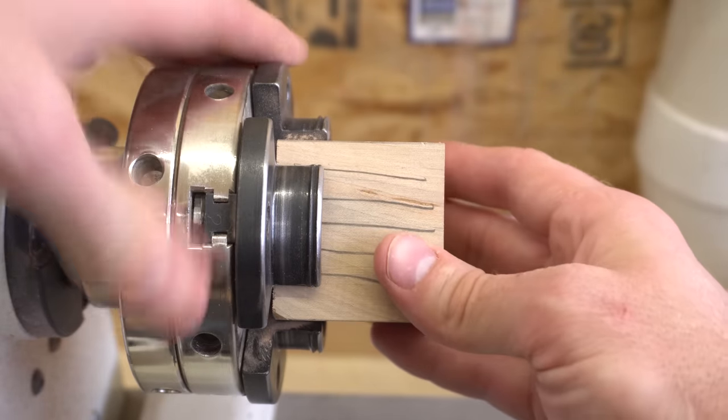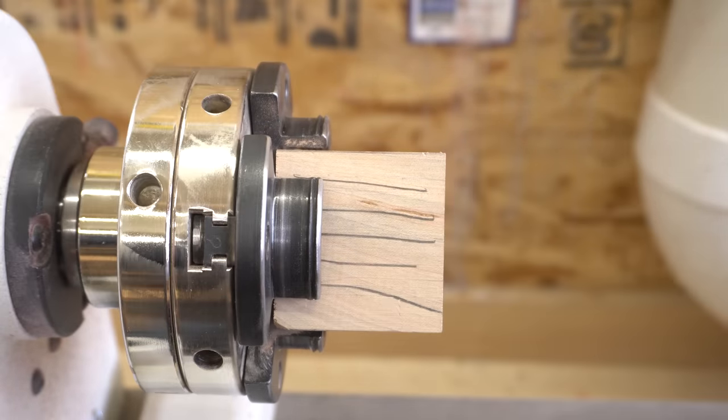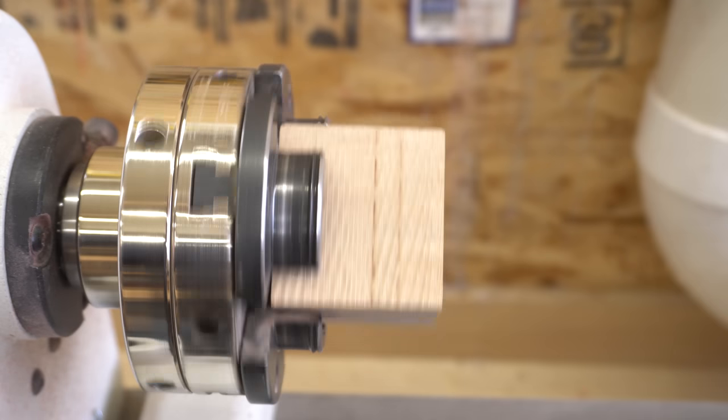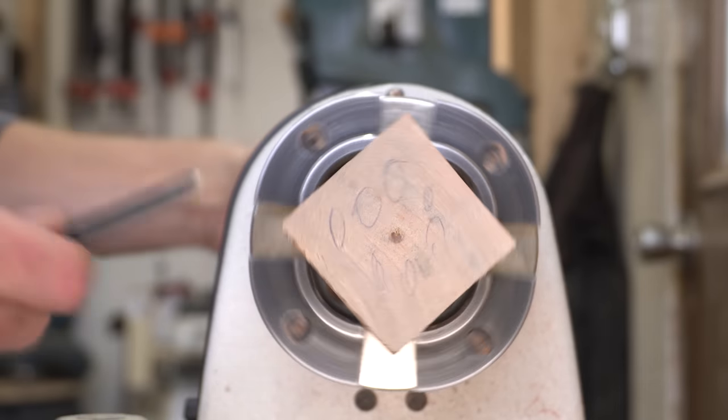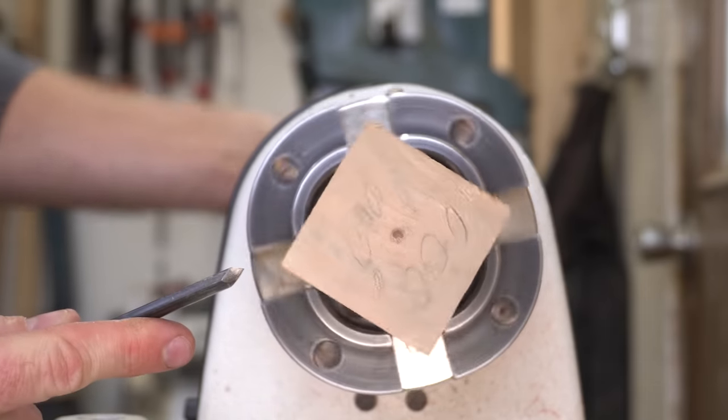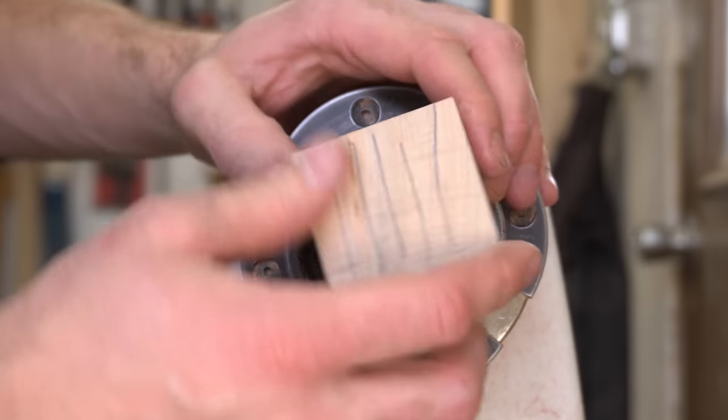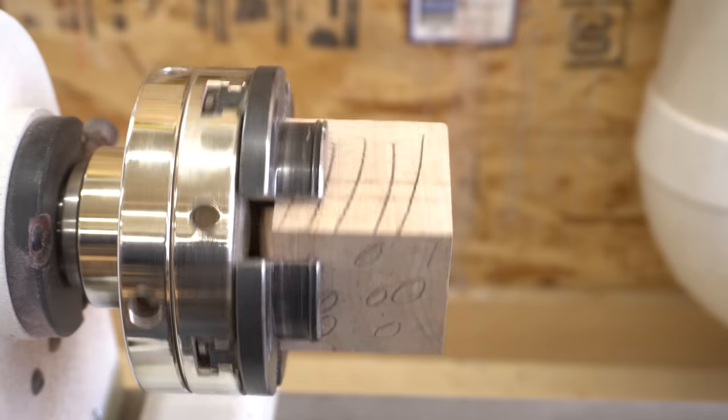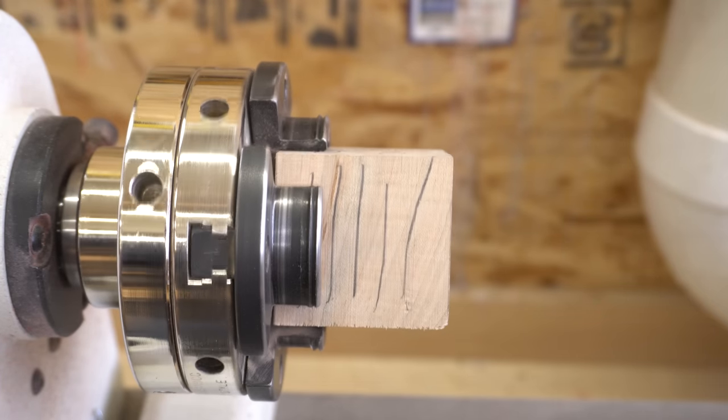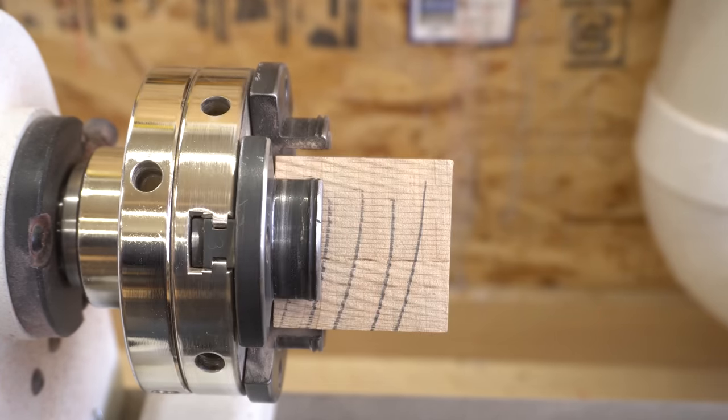In most situations you would mount wood in a lathe with the grain running left to right like this. When it starts spinning, all that's ever coming at you is the edge grain. When viewed from the end, the end grain just sort of spins in place. When you switch the orientation and have the end grain coming at you, you introduce a different pattern. Now the blank is alternating between end grain and edge grain every quarter of a turn.